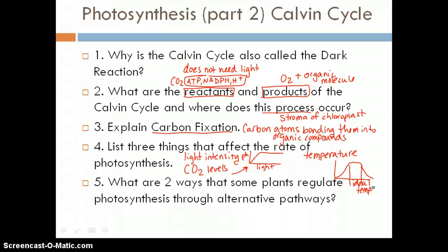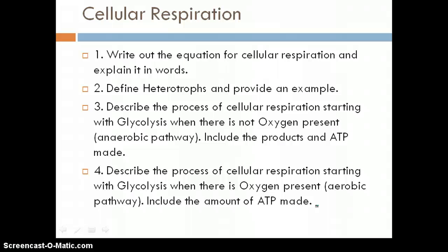So two ways that some plants regulate photosynthesis through alternative pathways. So we had C4 plants and CAM plants. And basically they both regulate the stomata, which are pores in the leaves. And when they do that, they might absorb light during the main part of the day, but then they'll do a lot of their work at night when there's less chance of them losing some of that water from their stomata.